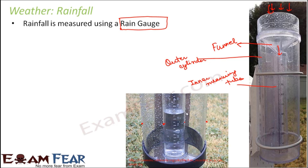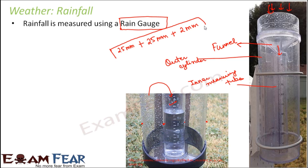Let us quickly repeat the process. When it is raining very heavily, the inner measuring tube will soon be full — its maximum capacity is 25 mm. So you note that 25 mm, empty the inner tube, then pour the excess water from the outer cylinder into the inner cylinder and measure again. If it fills again, add another 25 mm. Whatever remains — say 2 or 3 mm — you add that up to get the total rainfall measurement.